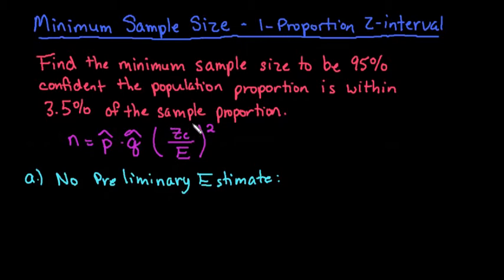Like I said before in other videos, zc could also be z star in your textbook. And then E represents the margin of error. The margin of error is the within part.